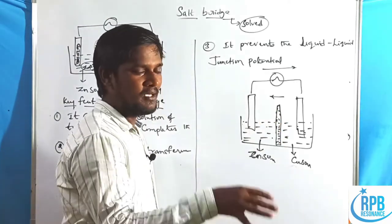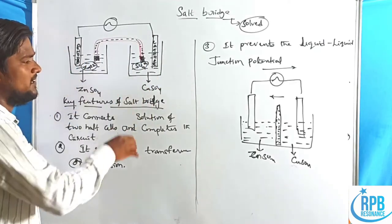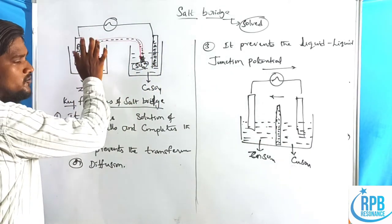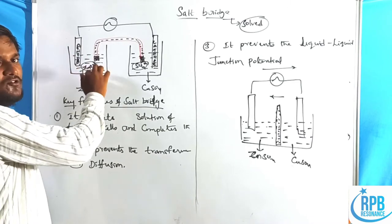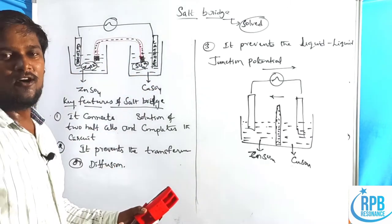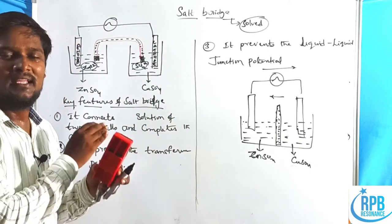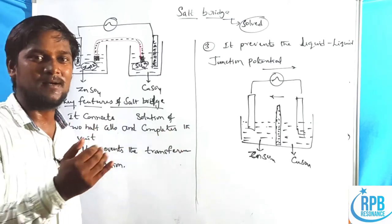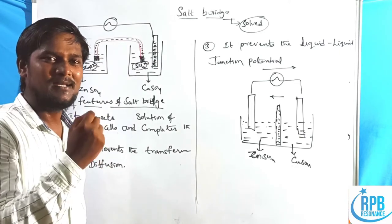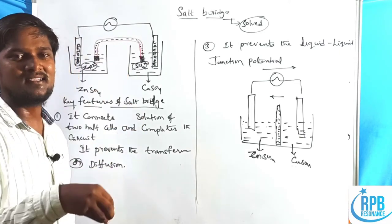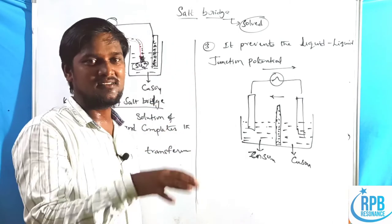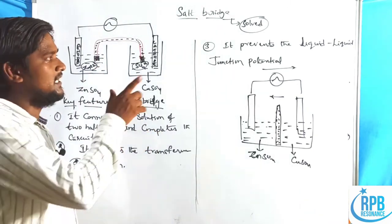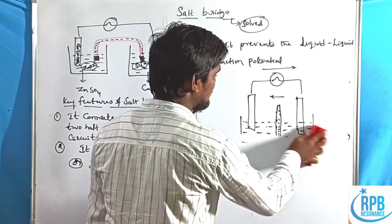When a semipermeable membrane is used, the liquid-liquid junction potential is observed. But with a salt bridge, this is prevented — there is no transfer of copper sulfate to the left compartment or zinc sulfate to the right compartment. Since the solutions cannot mix across the junction, no liquid-liquid junction potential is observed, avoiding degradation of the electrode potential.